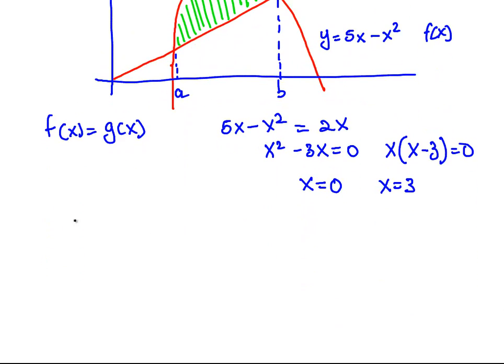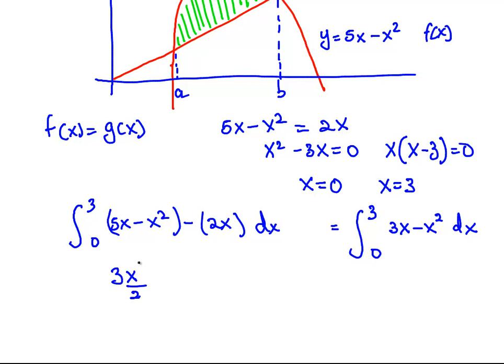Integral from 3 to 0 of 5x minus x squared, that's f of x, minus 2x, which is g of x. 5x minus x squared minus 2x, that works out to be, if you simplify that, you get 3x minus x squared dx. This turns into a straightforward definite integral problem. That is 3x squared over 2 minus x cubed over 3, a definite integral evaluated from 0 to 3. That works out to be 27 over 2, so that's 3 squared times 3 is 27, over 2, minus 27 over 3.